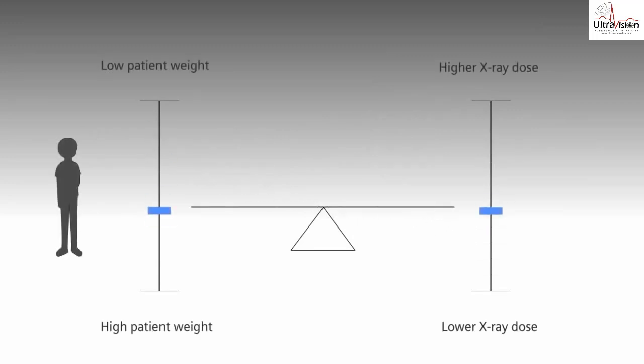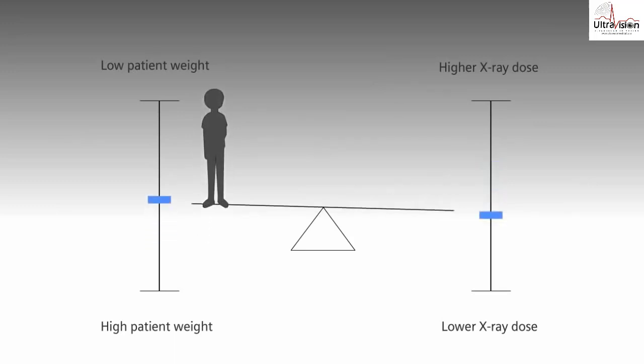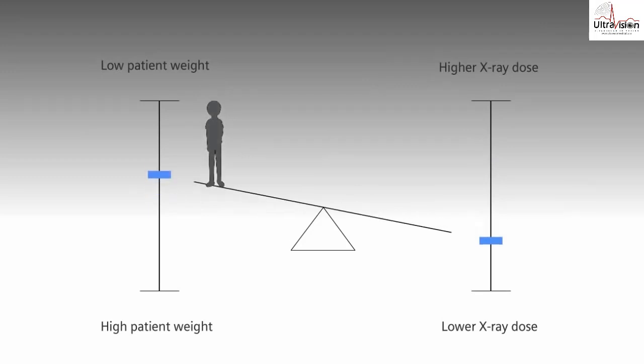We always consider the dose in the context of various circumstances — for example, the weight of the patient. A bigger person can tolerate a higher dose than a smaller one, so children in particular should not receive as high a dose as an average adult. This is why when we get an x-ray, the patient's weight is taken into account. Children are also more sensitive to radiation because their cells are still developing, which is why cell mutations caused by radiation would tend to spread faster in children.